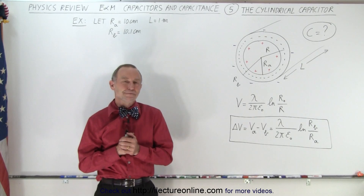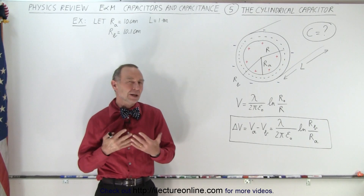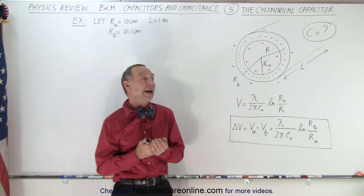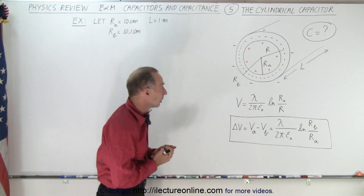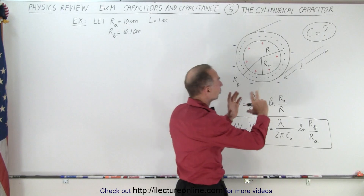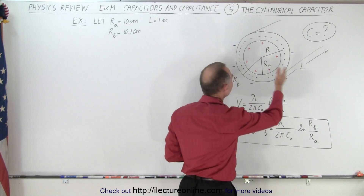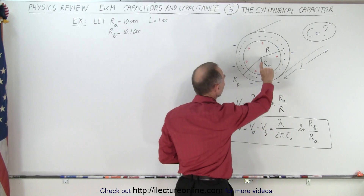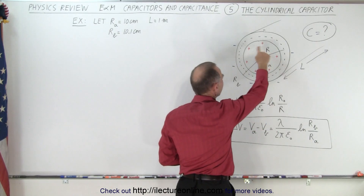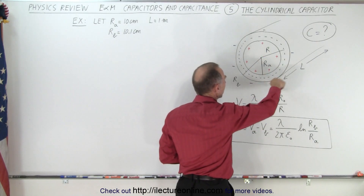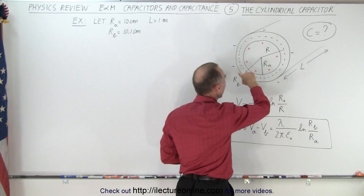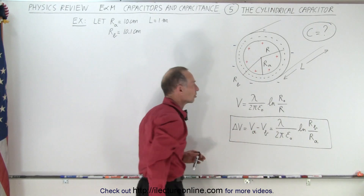Welcome to our lecture online. Now let's take a look at a cylindrical capacitor. We have two cylindrical sheets of metal. The inside one with a smaller radius R sub A has positive charge on it, and the outside one with radius R sub B has a negative charge on it.